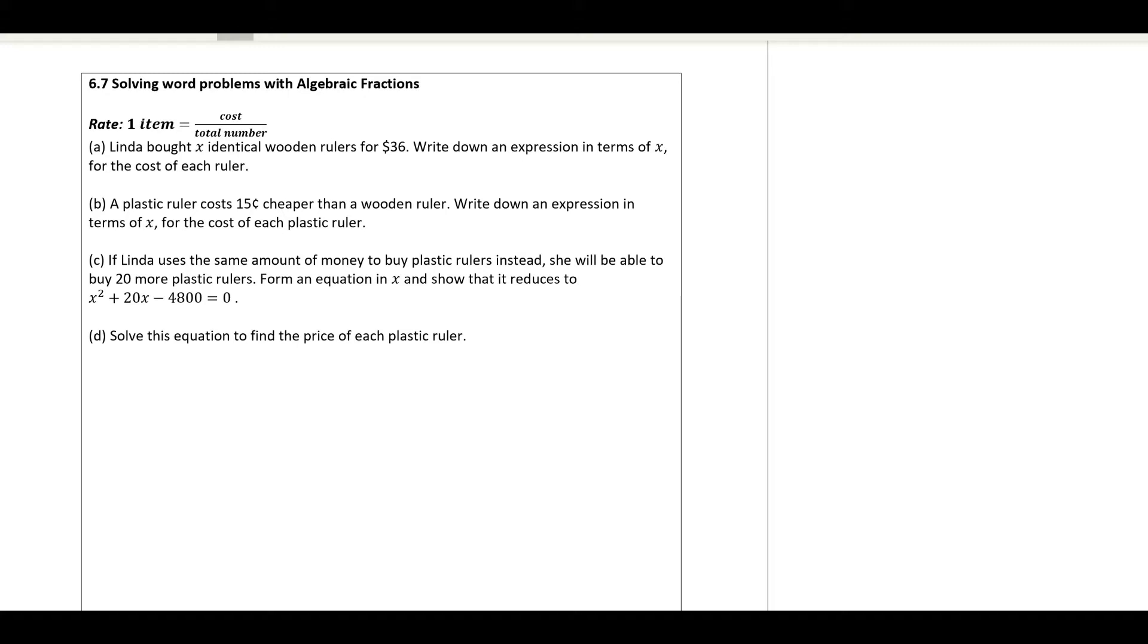Linda bought X wooden ruler for $36. Find the cost of each ruler. They will always lead you with this. So number A, cost of one ruler is equal to 36 over X.